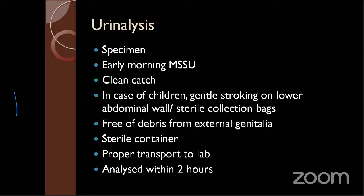It should be a clean catch — the container should be sterile and should not touch the external genitalia. The patient voids about 10 to 15 ml, and then the rest of the midstream sample is collected in a sterile container. In children, it might be slightly difficult; we can gently stroke the lower abdominal wall or use sterile collection bags. The urine sample should be free from debris, as many false positive or false negative lab values can result from even the slightest external genital contamination. The sample must be transported to the lab and analyzed within two hours.